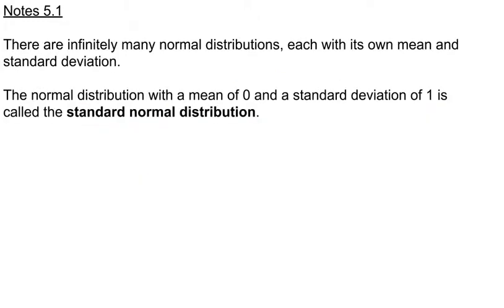Looking at the normal distribution, there's an infinite number of them. We looked at the formula for a normal distribution, and it is defined by the mean and the standard deviation. There are a lot of different data sets, a lot of different possible means and standard deviations, and many combinations between them. The normal distribution with a mean of zero and a standard deviation of one is called the standard normal distribution, and we're going to spend some time looking at it.